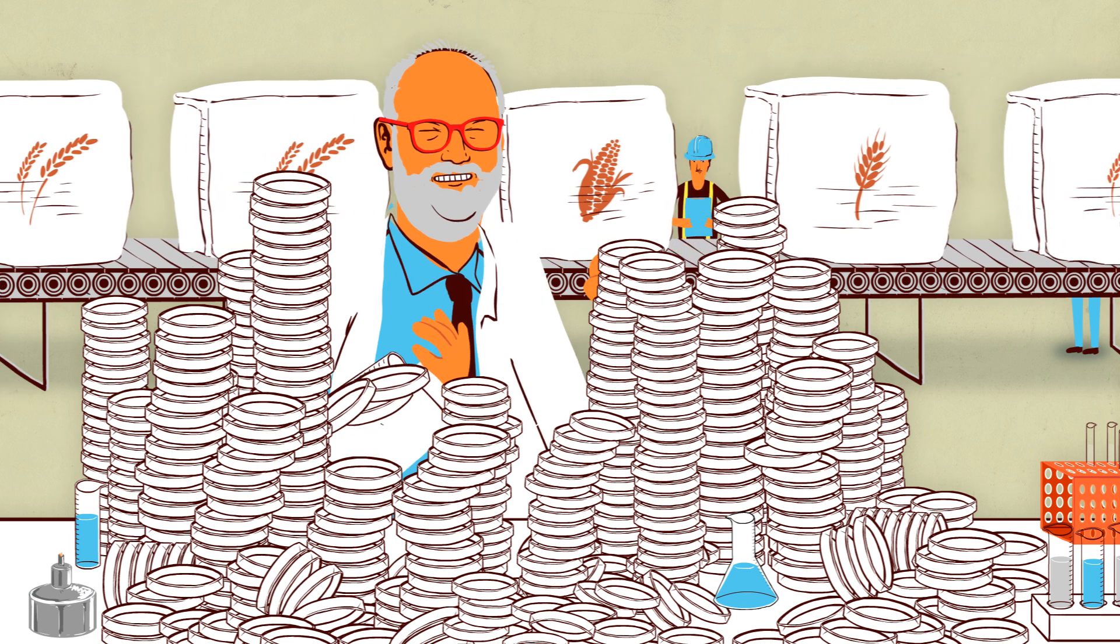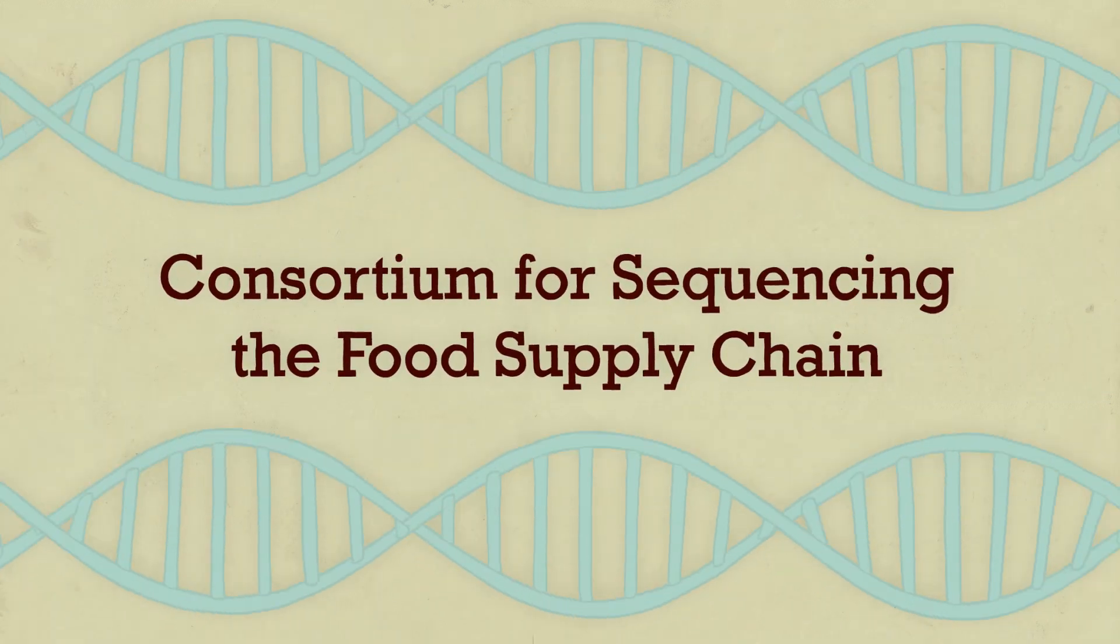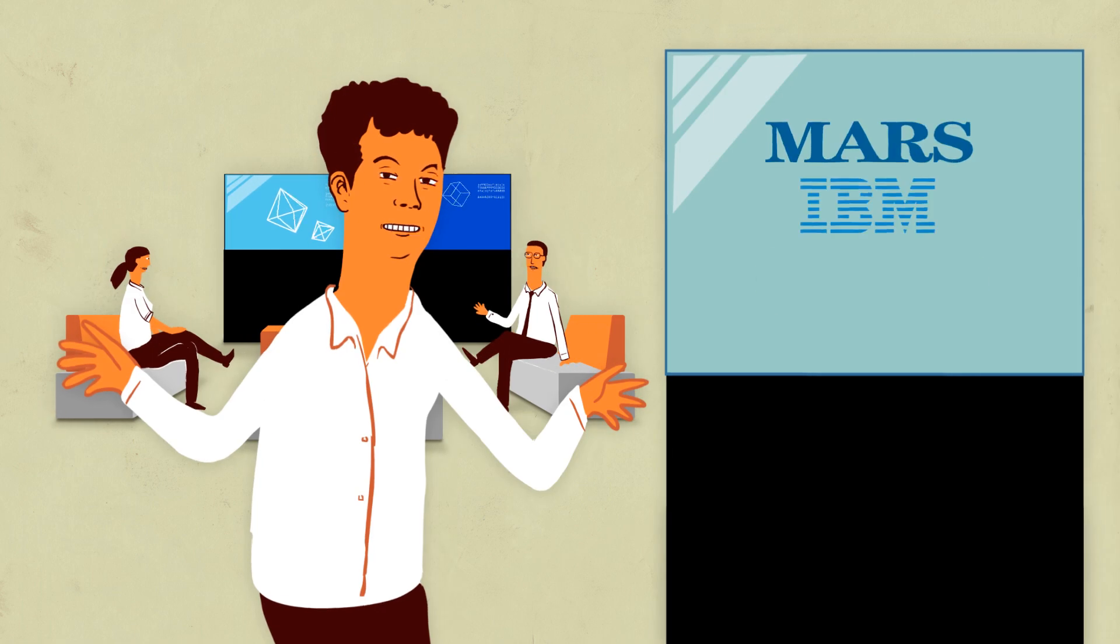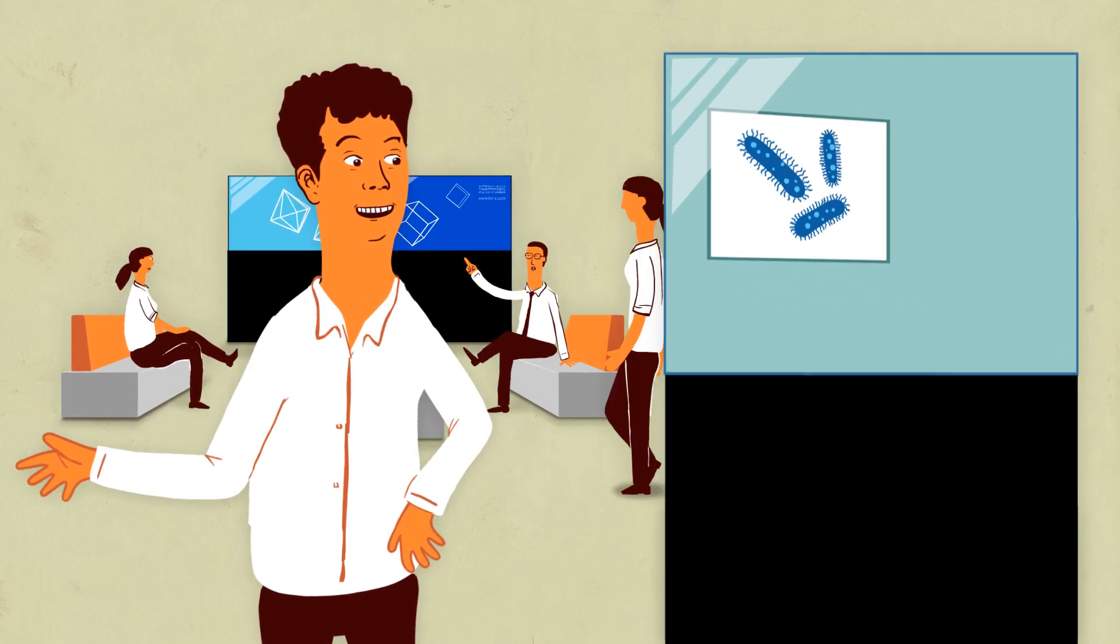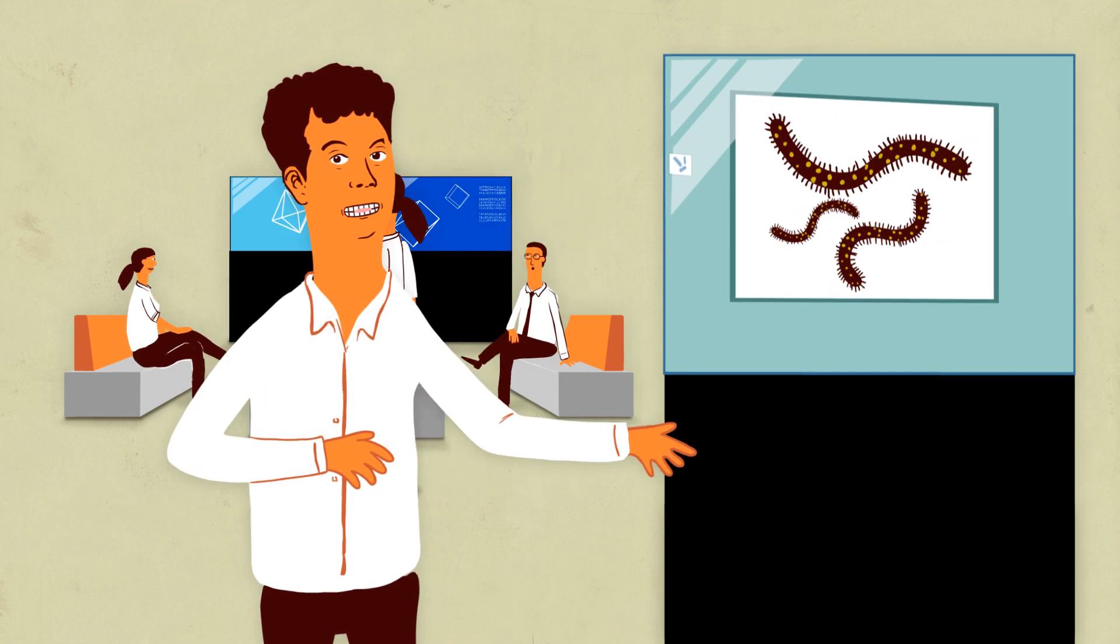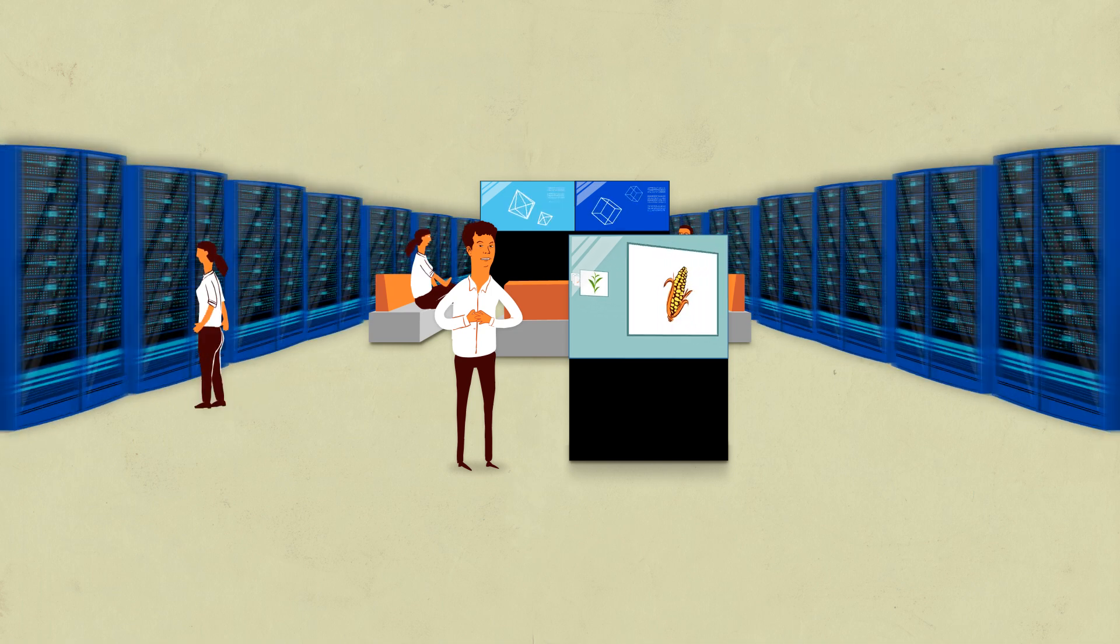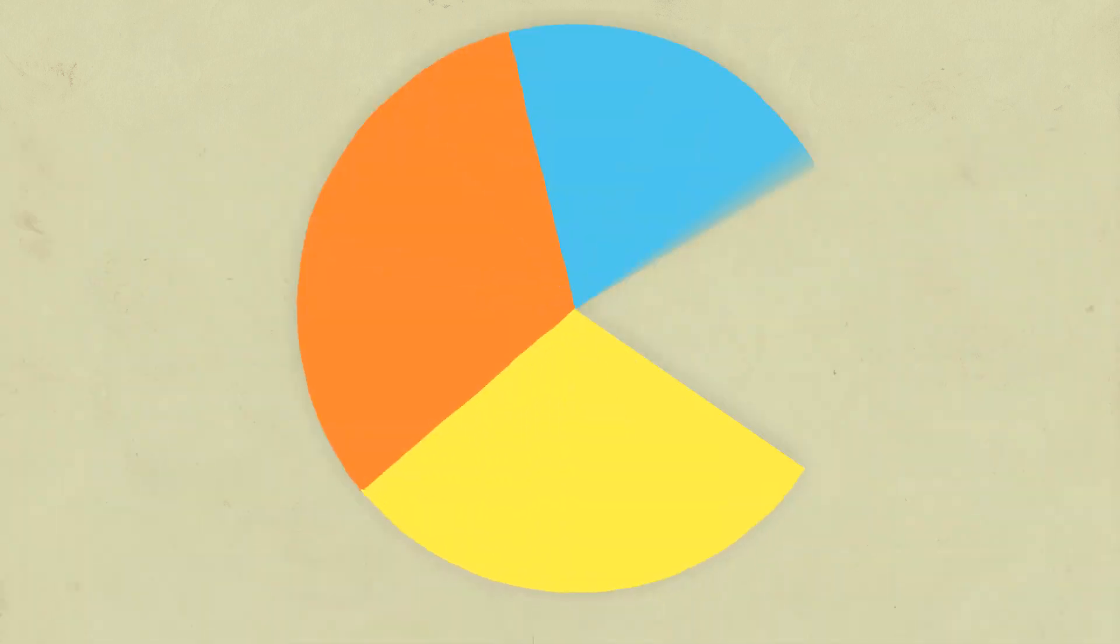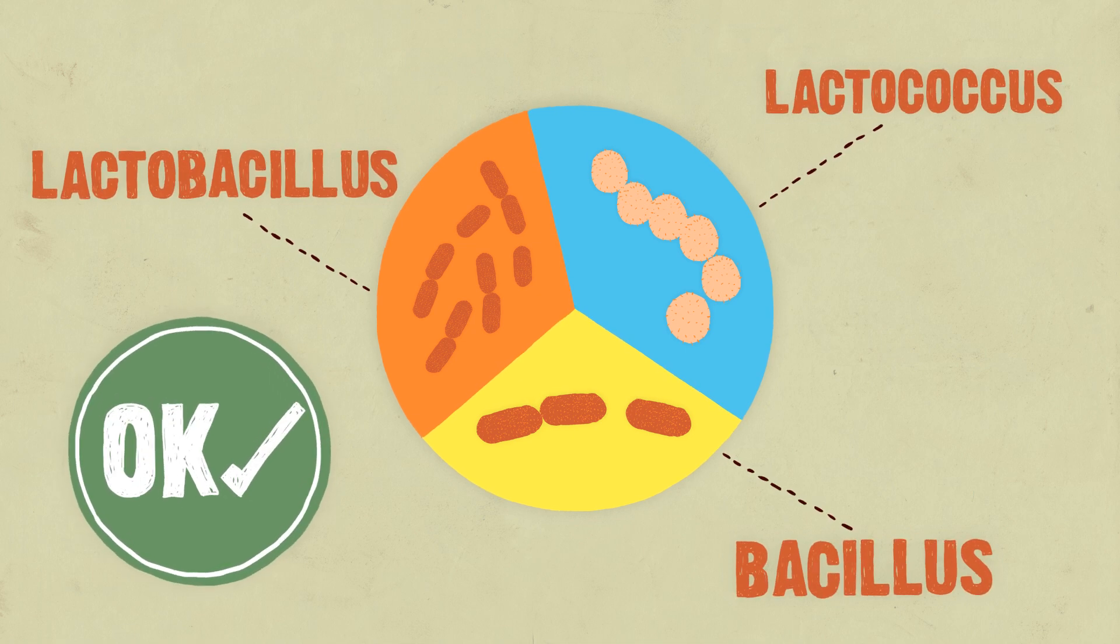We needed to think about this differently. That's why Mars and IBM joined forces to sequence the genomes of all the organisms in the food supply chain. That's millions of organisms, but big data is what IBM is good at.